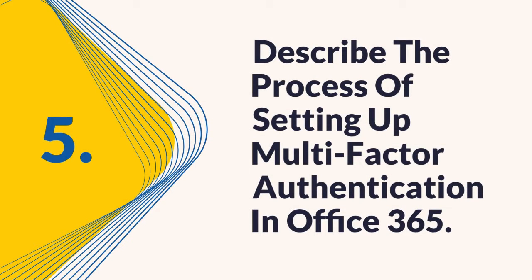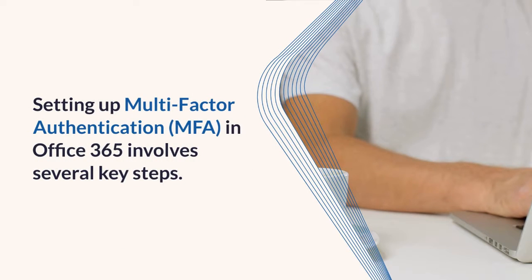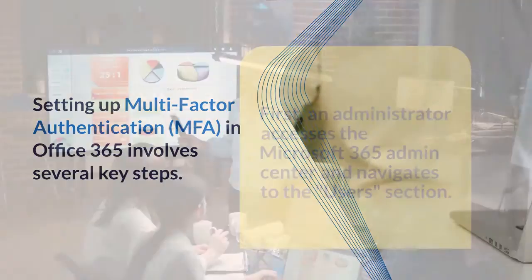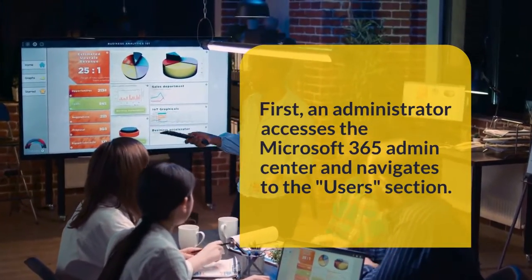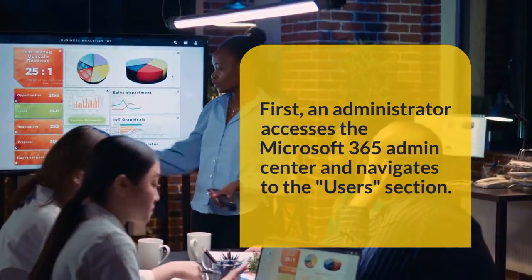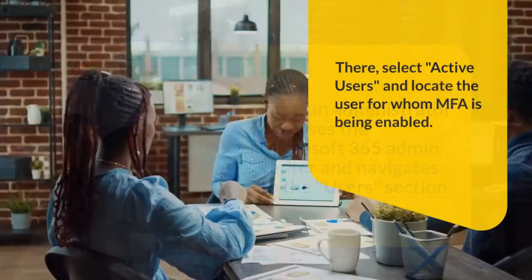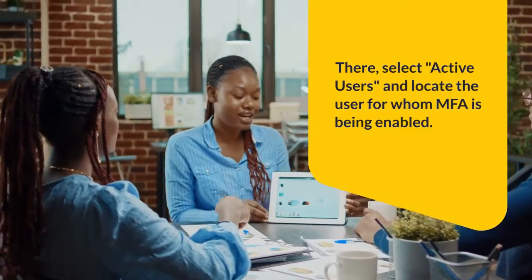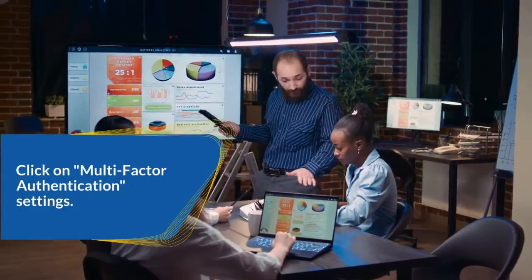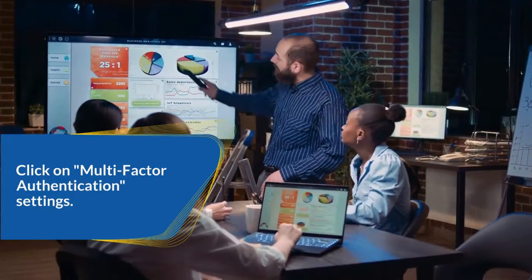Describe the process of setting up multi-factor authentication in Office 365. Setting up multi-factor authentication involves several key steps. First, an administrator accesses the Microsoft 365 Admin Center and navigates to the Users section. There, select Active Users and locate the user for whom MFA is being enabled. Click on Multi-factor authentication settings.